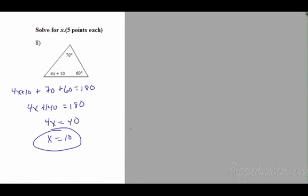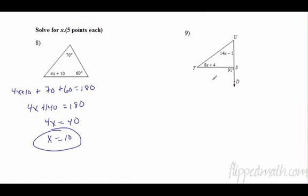Oh, these are remote interior angles. Remember they add up to equal the exterior angle. So 91 equals 8x plus 4, plus 14x minus 1. So now we have 91 equals 8x plus 14x plus 4 minus 1.